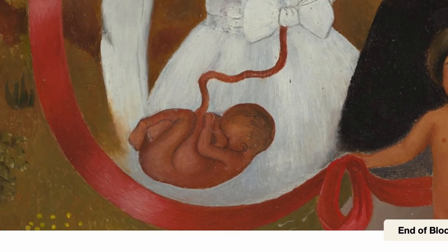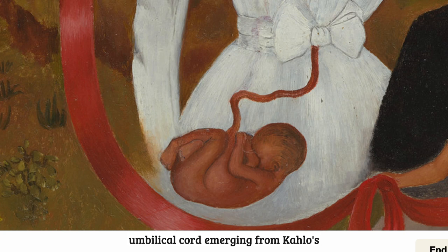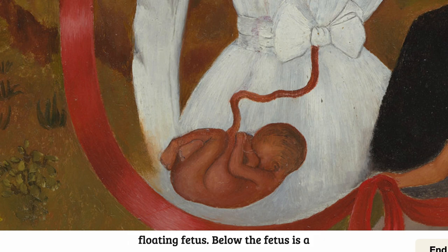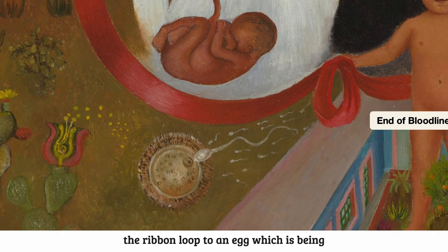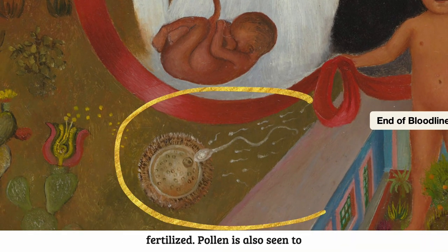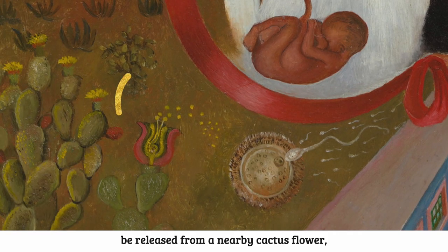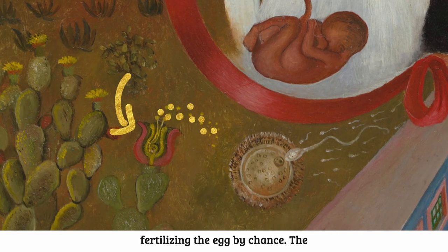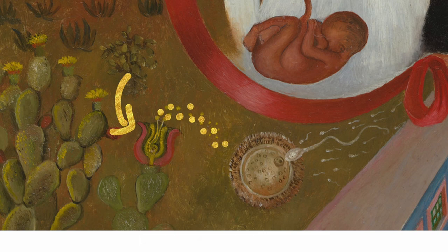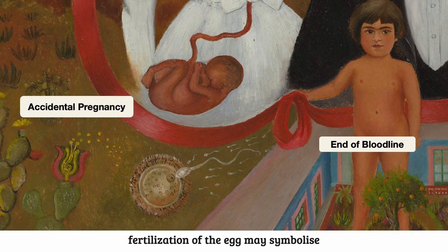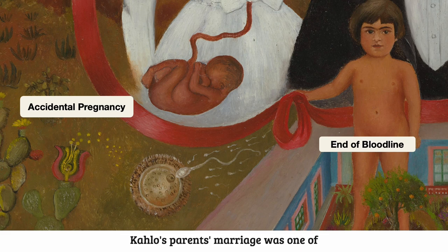This is further underscored by the presence of an umbilical cord emerging from Kahlo's mother's stomach, connecting to a floating fetus. Below the fetus is a depiction of a sperm swimming through the ribbon loop to an egg, which is being fertilized. Pollen is also seen to be released from a nearby cactus flower, fertilizing the egg by chance. The fertilization of the egg may symbolize an accidental pregnancy, indicating that Kahlo's parents' marriage was one of convenience rather than love.